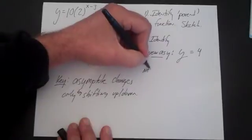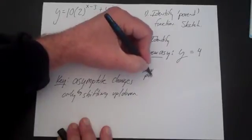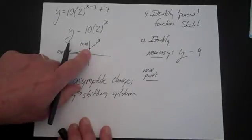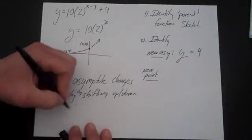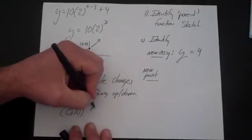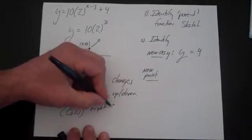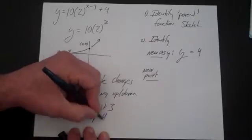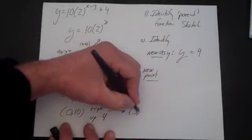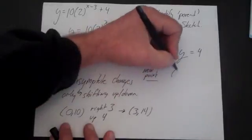So in this case, the new asymptote is y equals 4. We can also find a new point. Well, if we follow the point 0, 10, the point 0, 10 would move right 3 and up 4. So the x moves 3, so that goes to 3, 14. So that's one new point.